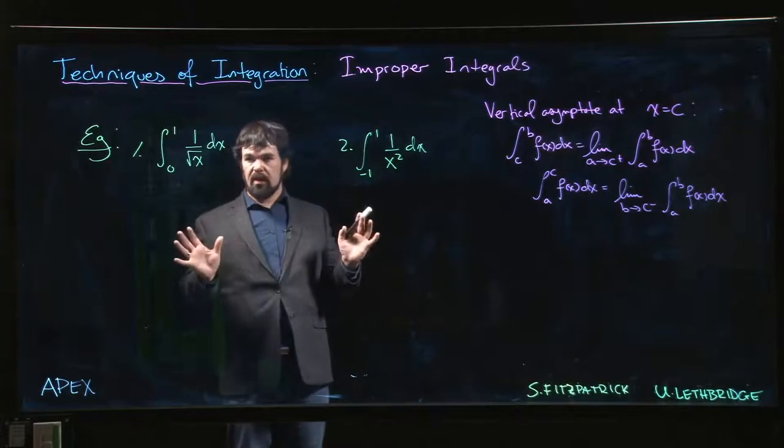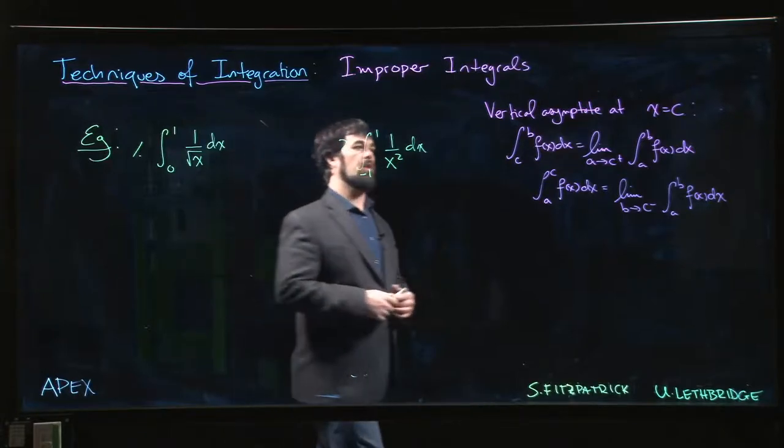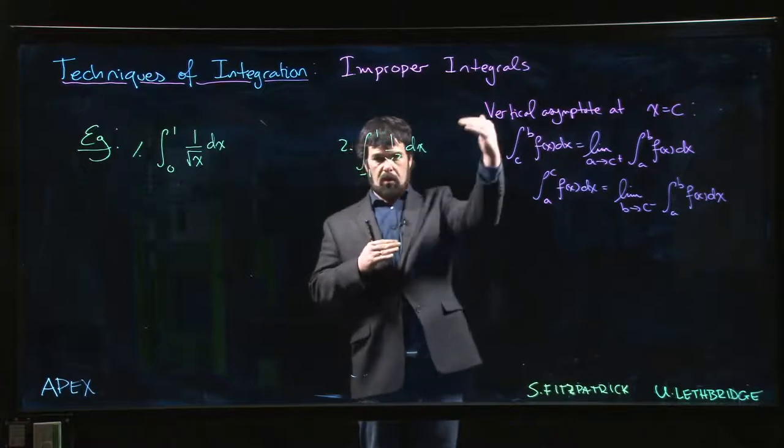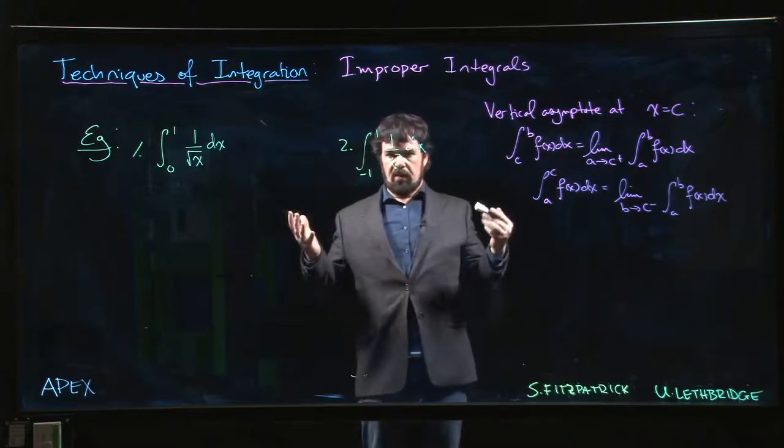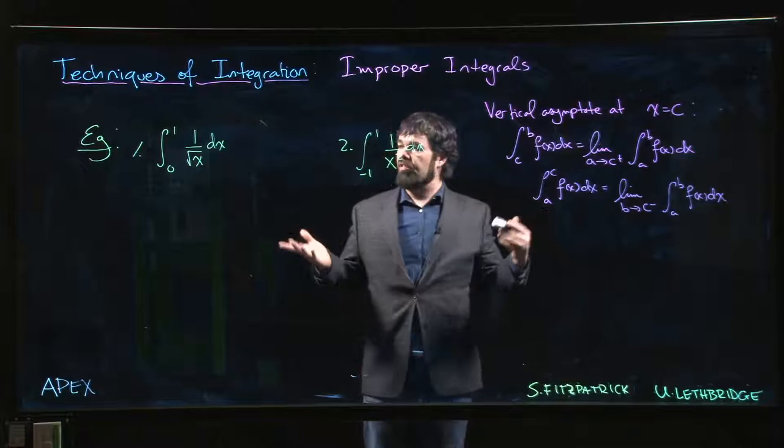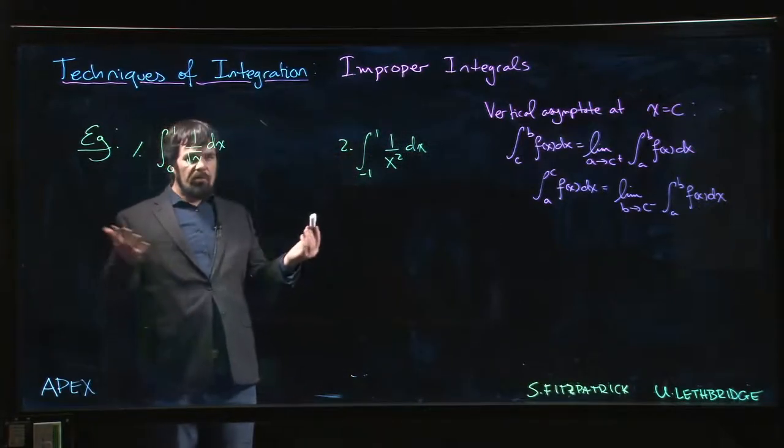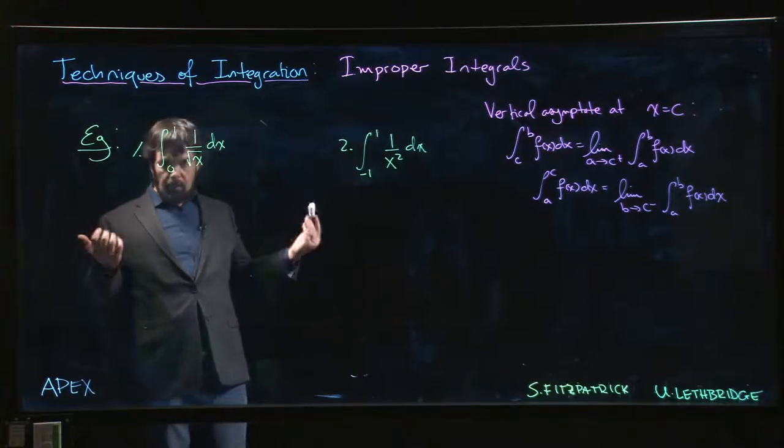Okay, so the examples we've looked at so far with improper integrals were ones where one of the limits of integration, one of the bounds, was in a sense unbounded. We wanted to go all the way to infinity, and so we rewrote the integral as a limit and we decided whether or not the limit exists.